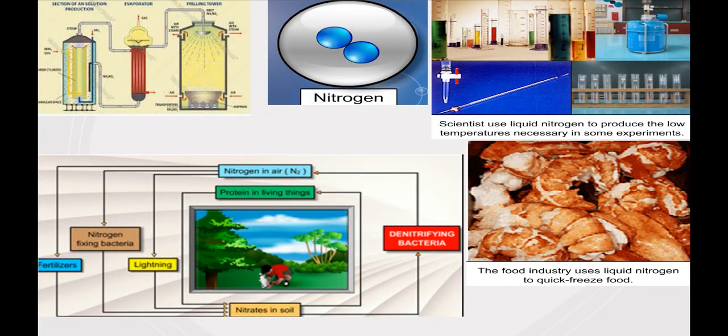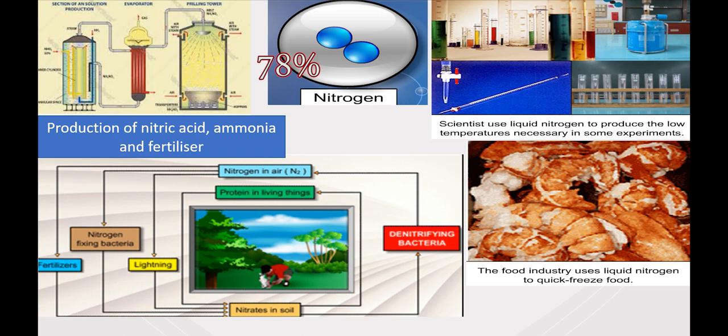Nitrogen is the most abundant gas in the air, taking up around 78%. Nitrogen is used in the production of nitric acid, ammonia, and fertilizer.